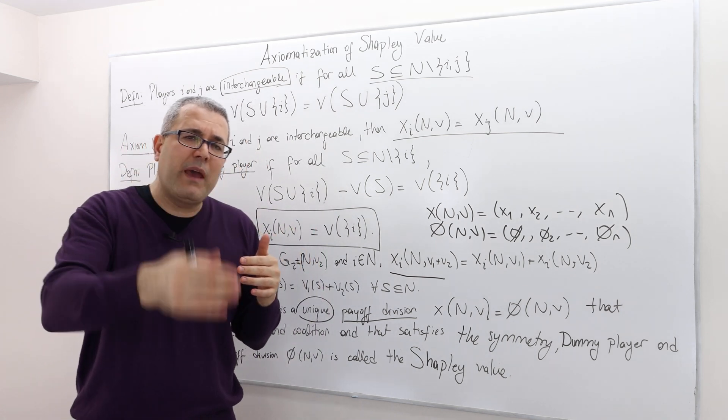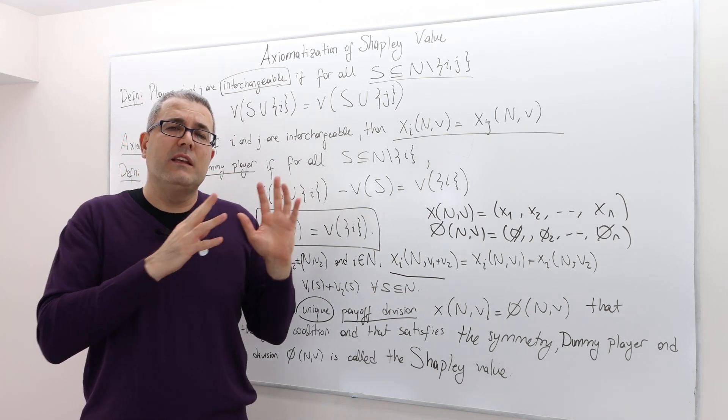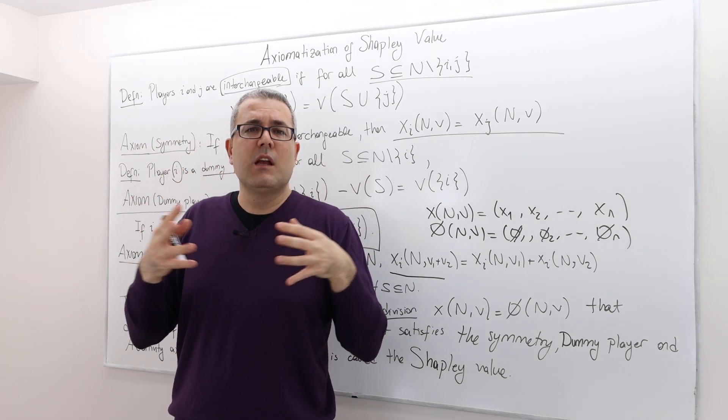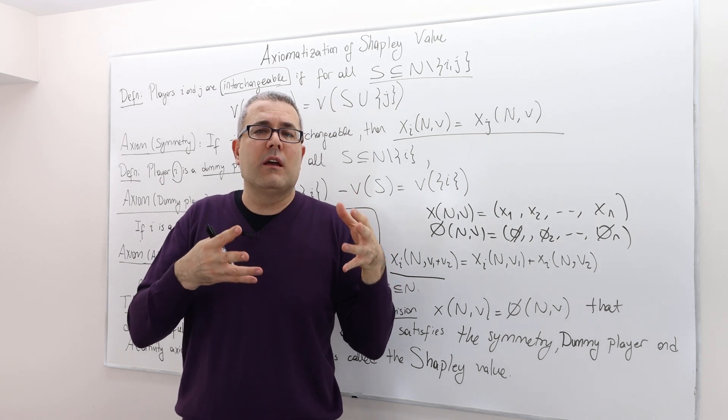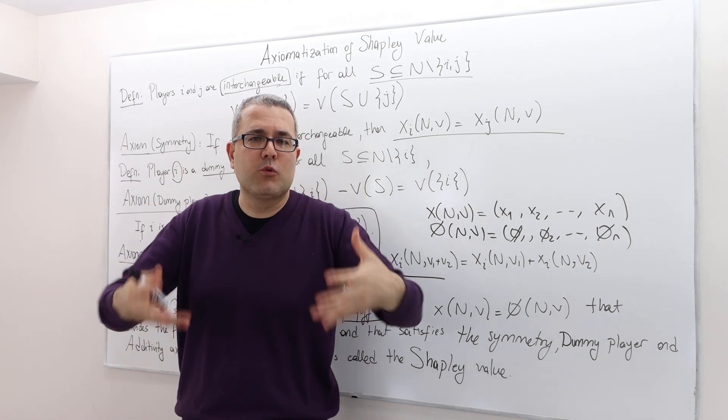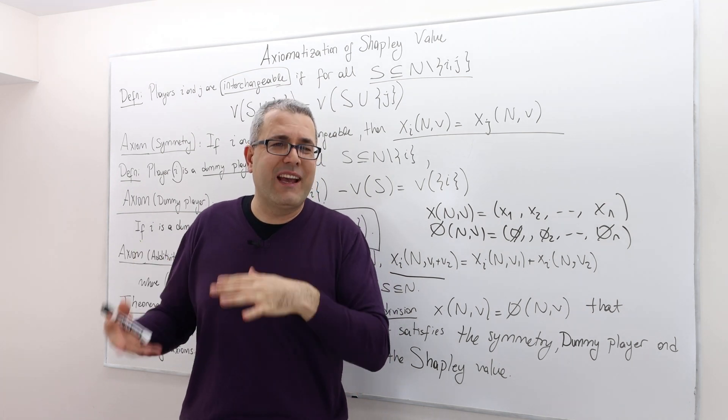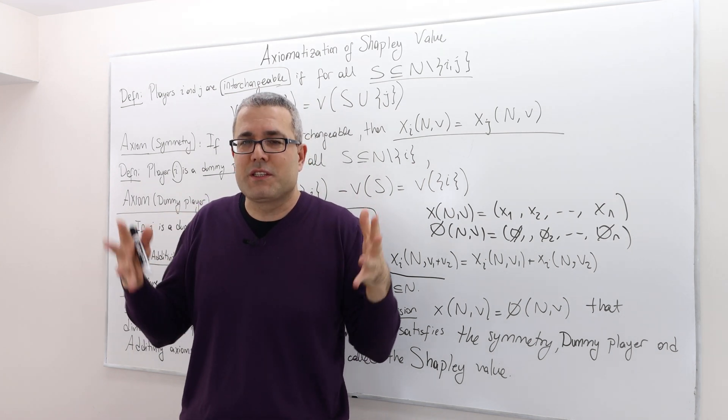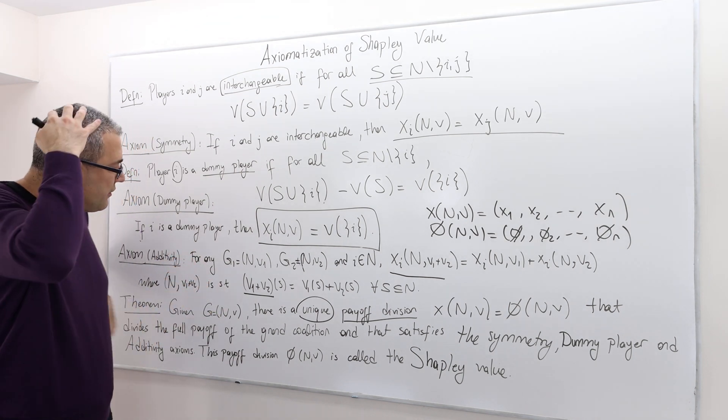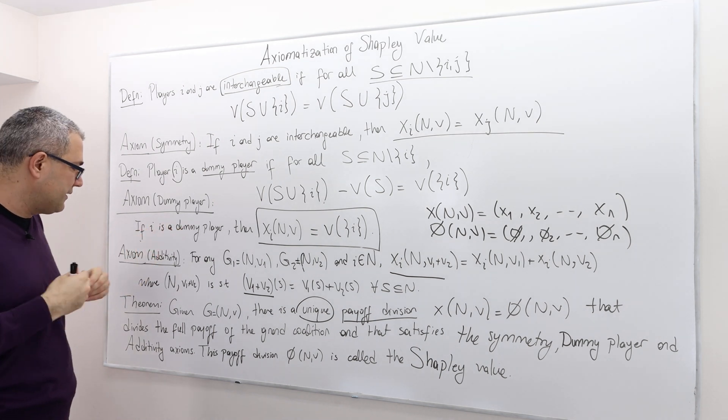And so the payoff each player should be getting in this doubled game must be the double of the payoffs of the original game. You see what I mean? So if the worth function doubles, well, then the outcome, the payoff function, the payoffs of each player should double as well. If you triple the worth function, well, then the payoffs of each player should be triple as well. So there's some sort of constant returns to scale going on. Again, it's a technical assumption, but to me, it makes sense. I mean, to be honest, it makes sense to me.